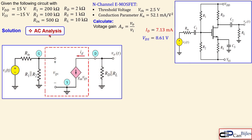Moving on to AC analysis, we now use the small-signal model. All capacitors are shorted and all DC voltage sources are grounded. This means VDD and VSS nodes go to ground, so R1 connects from the gate to ground and R2 also connects from the gate to ground, appearing in parallel.